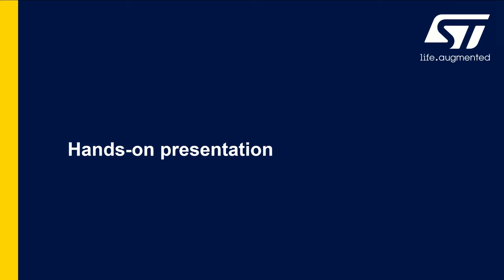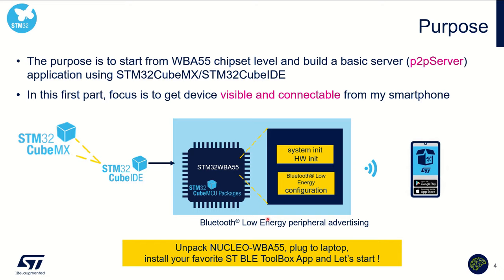What is the purpose of this hands-on? In the click and go, we are starting from an existing code example. Now we are willing to start at chipset level to build a basic P2P server application. The focus of this first hands-on is really to put the device visible and connectable from any smartphone. In hands-on two, on top of being connectable, you will be able to exchange data through attributes.